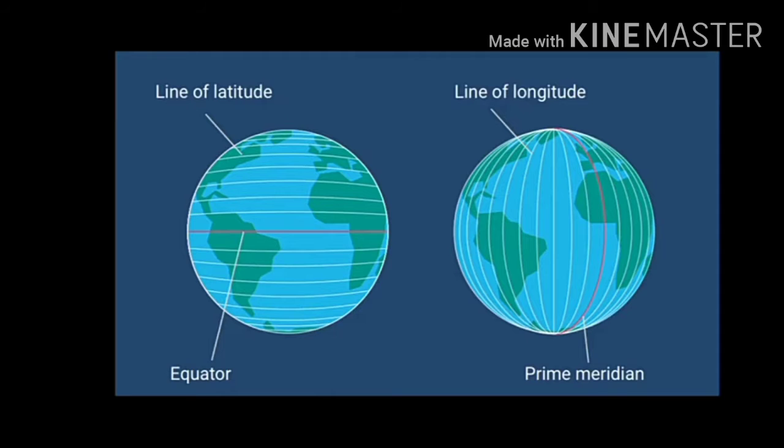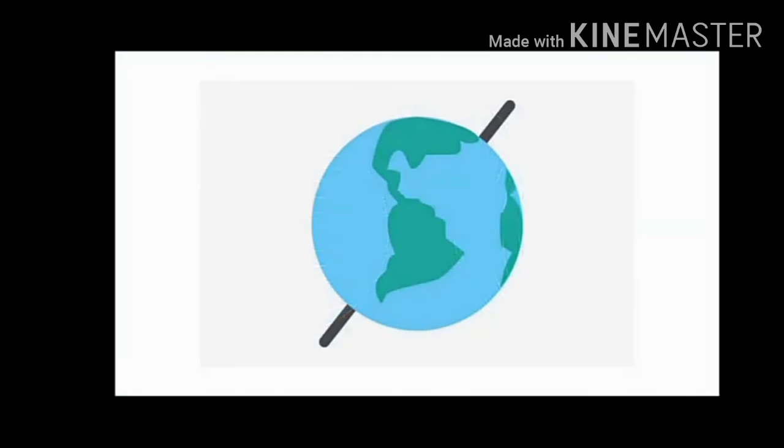The axis of the globe on which it rotates has two endpoints. These points are called poles. These poles can be used as two fixed points. The point at the top is called north pole and the point at the bottom is called south pole.